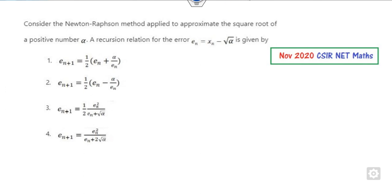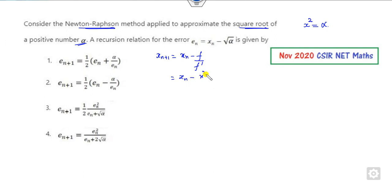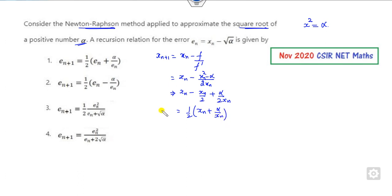The next question is related to the Newton-Raphson method — we need to find the square root of a positive number, meaning x² = alpha. The Newton-Raphson formula is x_{n+1} = x_n − f/f'. Substituting f(x) = x² − alpha with derivative 2x_n, you can simplify to get the recurrence formula: x_{n+1} = (1/2)(x_n + alpha/x_n).